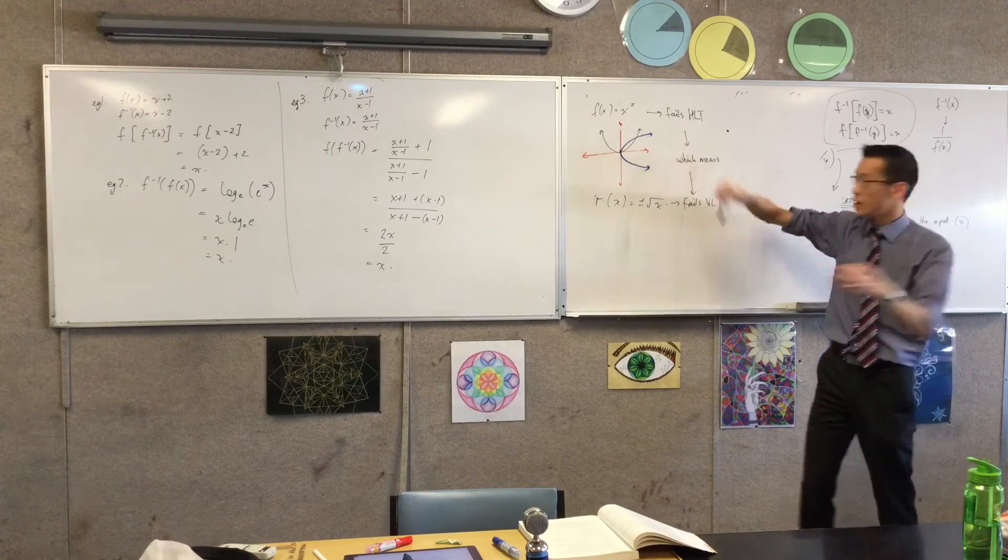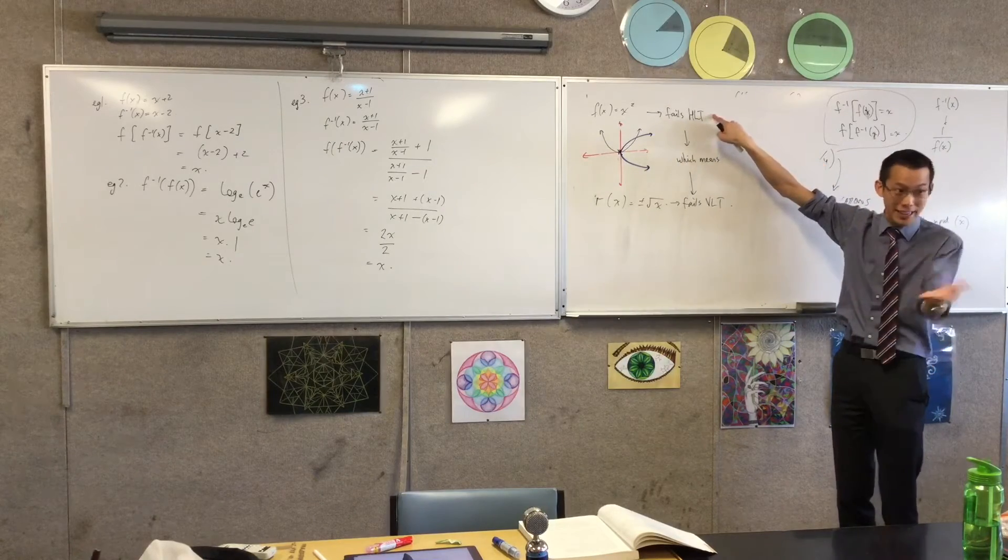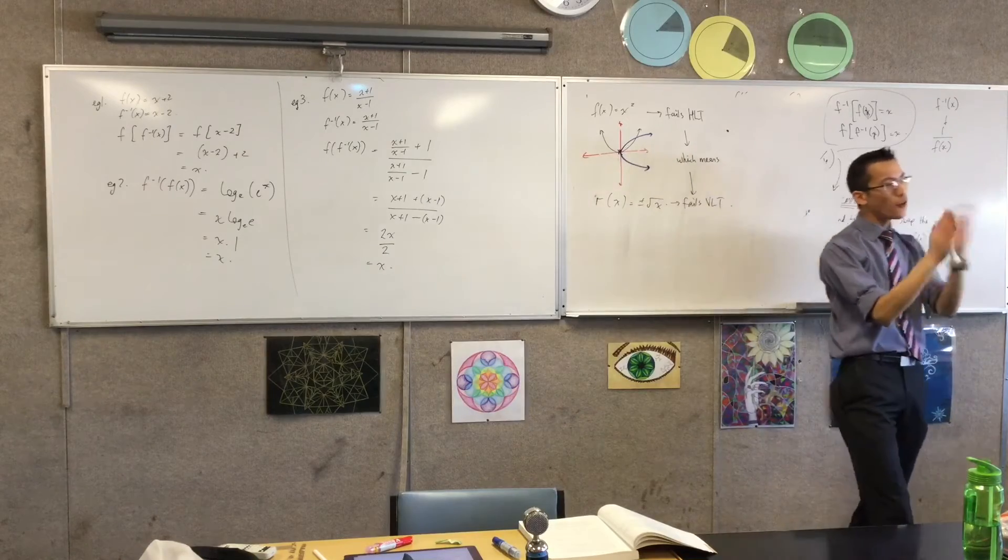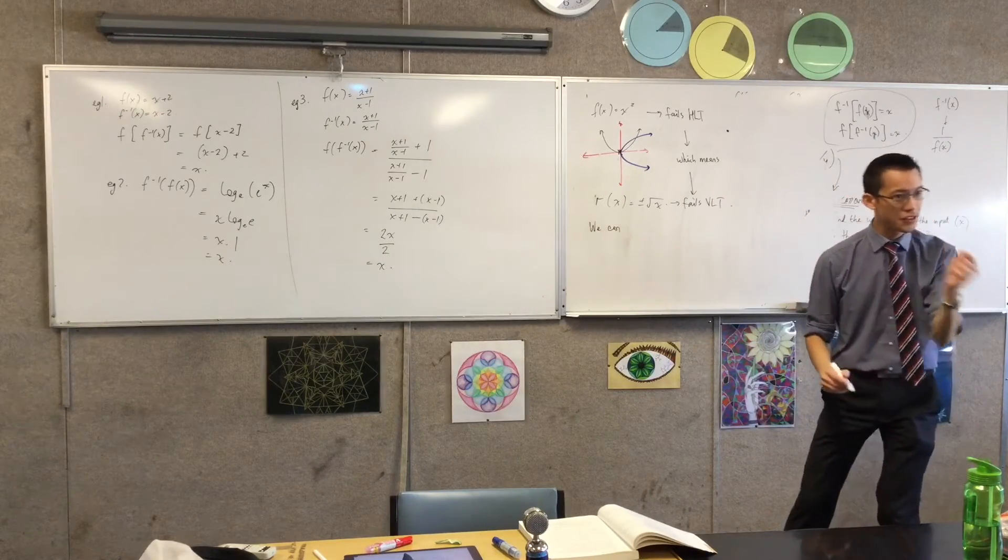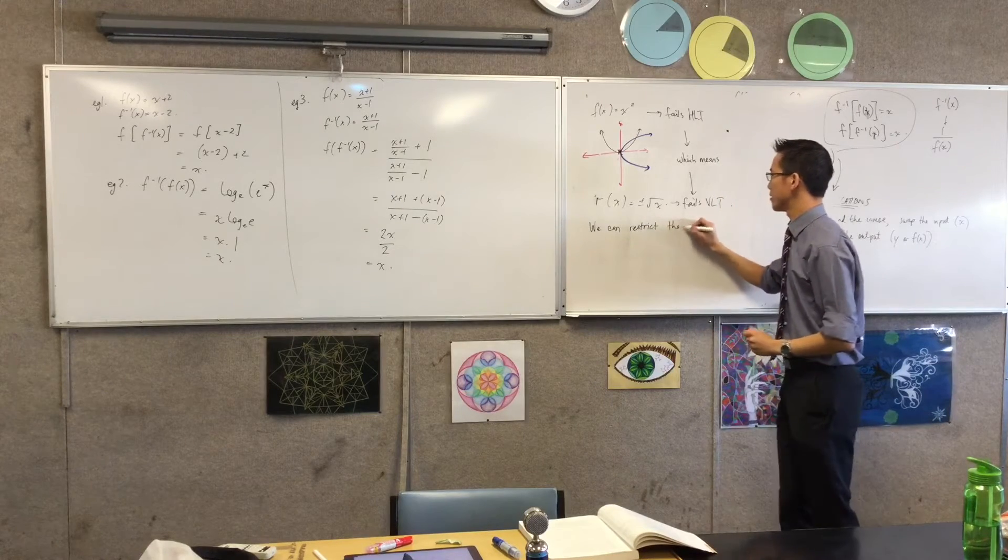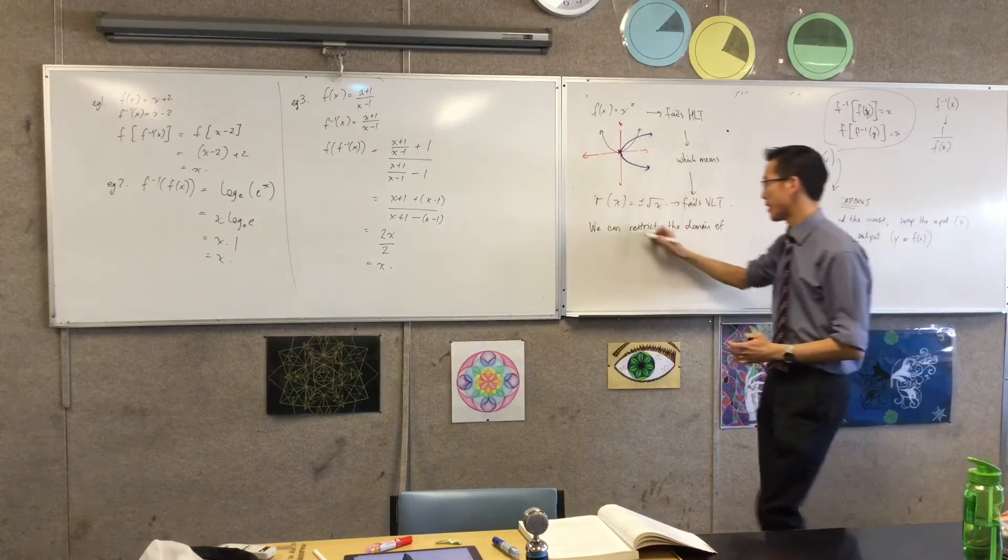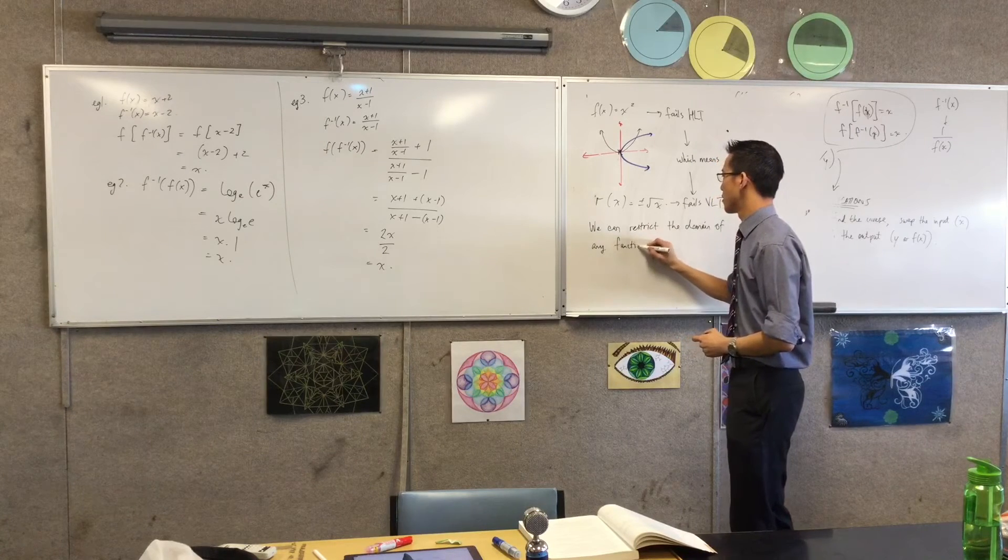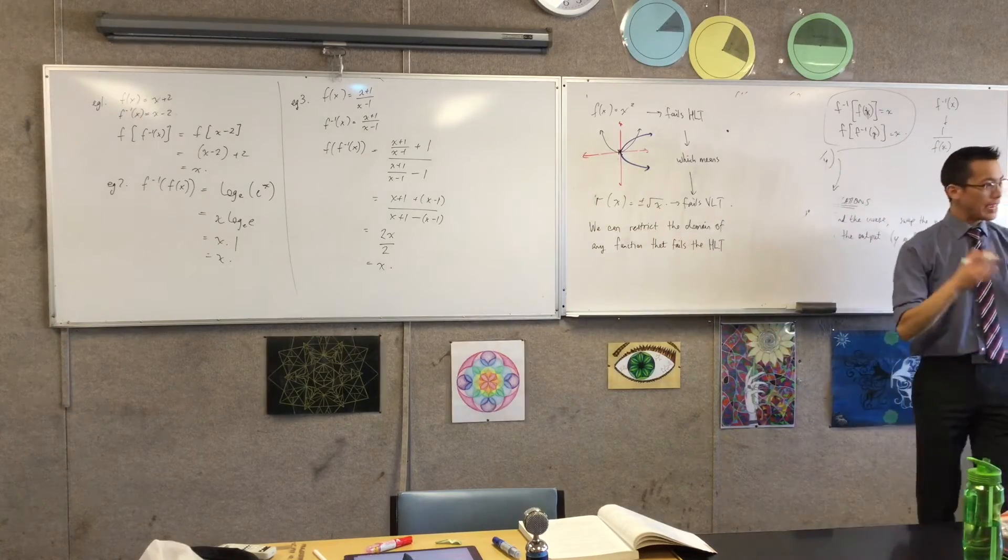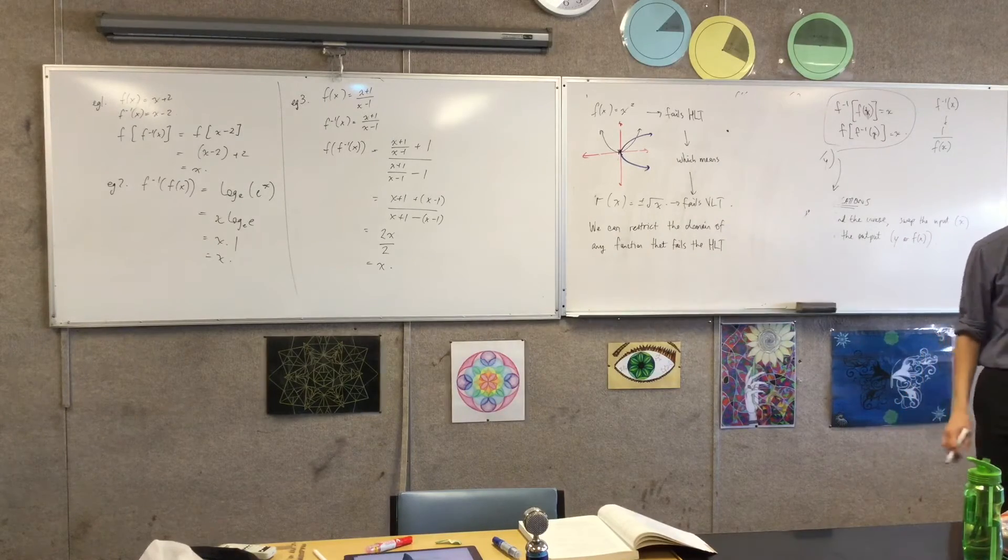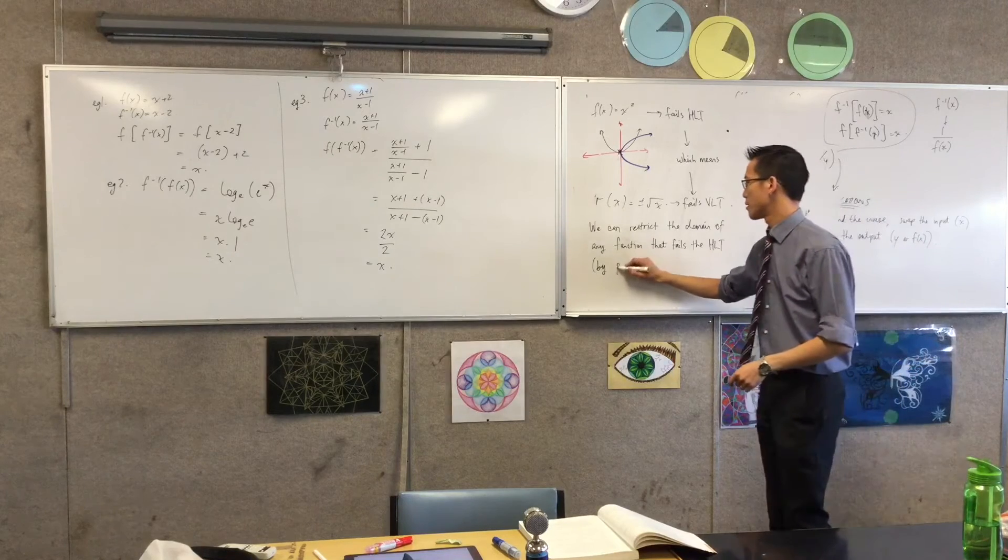It has a turning point. It has a turning point, right there. That guy there is the problem, because as soon as you turn, you're going to come back, and it means it's going to overlap. You're getting that second part, and your horizontal line test fails. So therefore, it's going to be either side of this turning point. We can restrict the domain. We can restrict the domain of any function that fails the horizontal line test. In order to get a part that passes it, and then you can get an inverse function out of that.